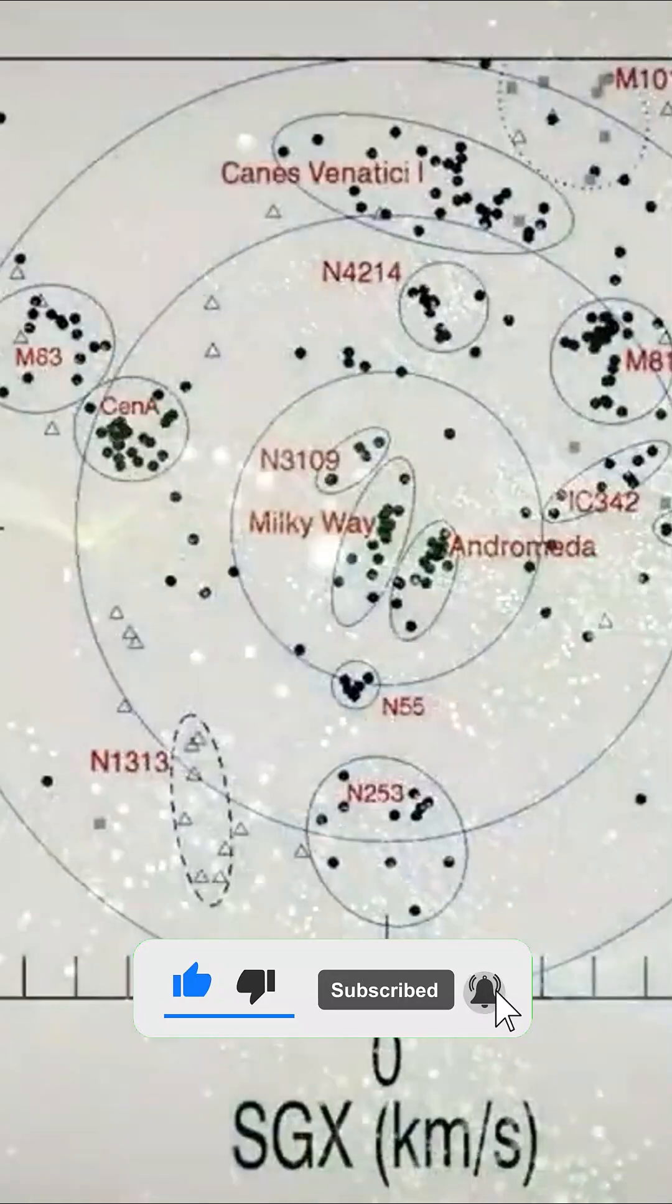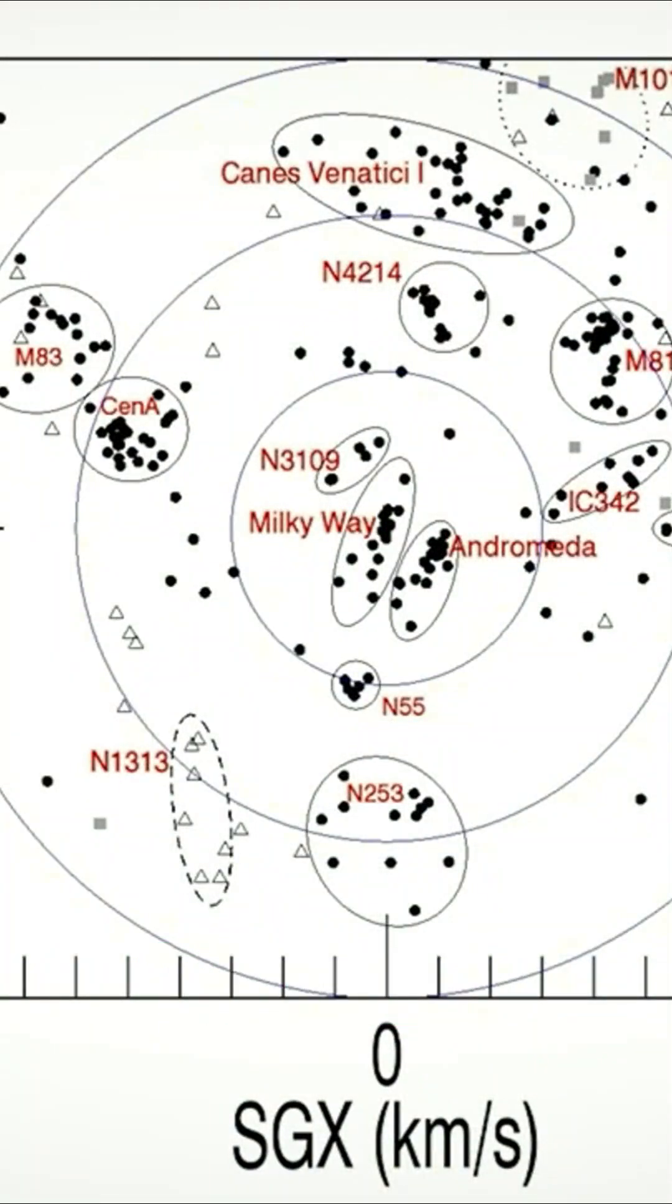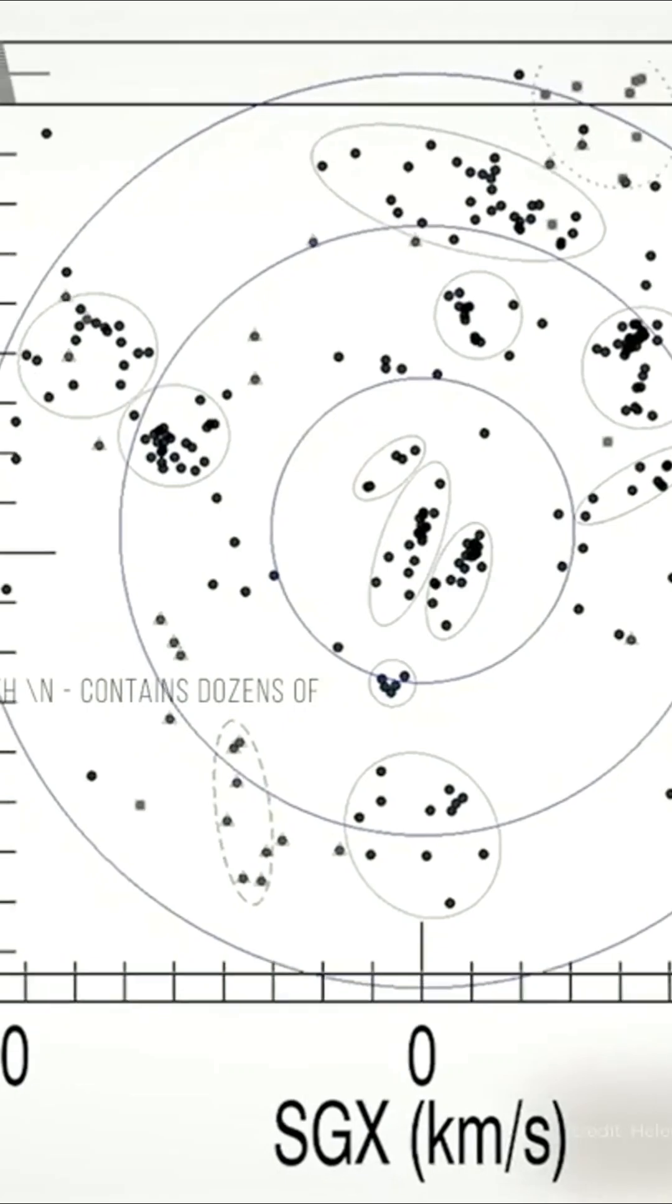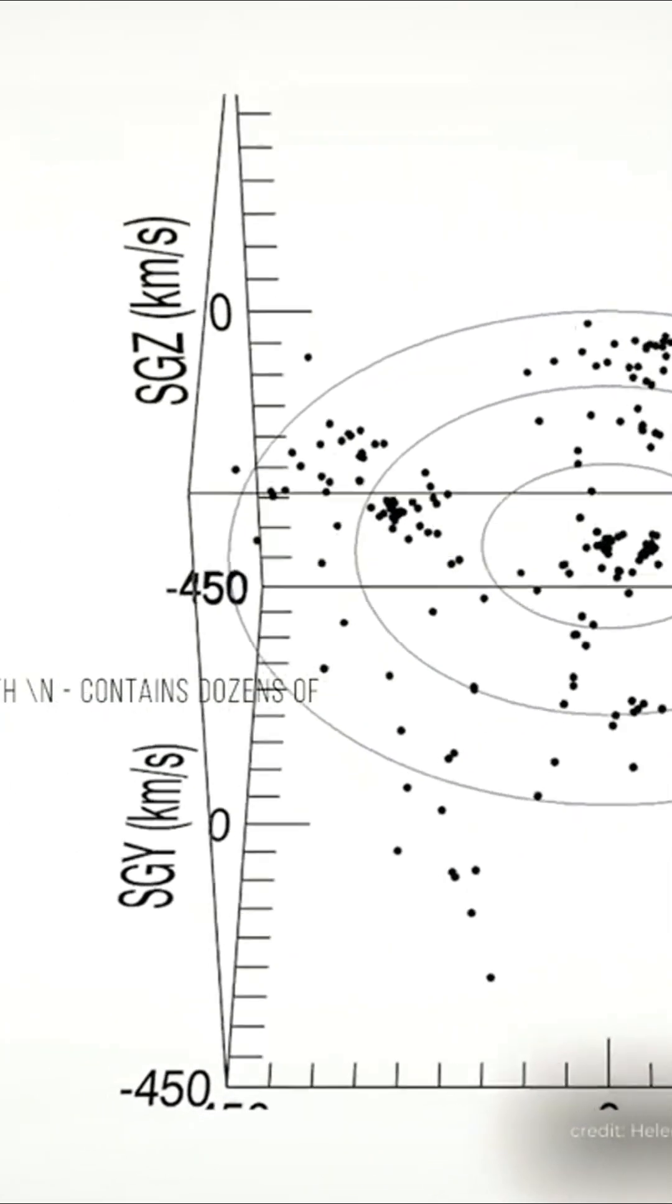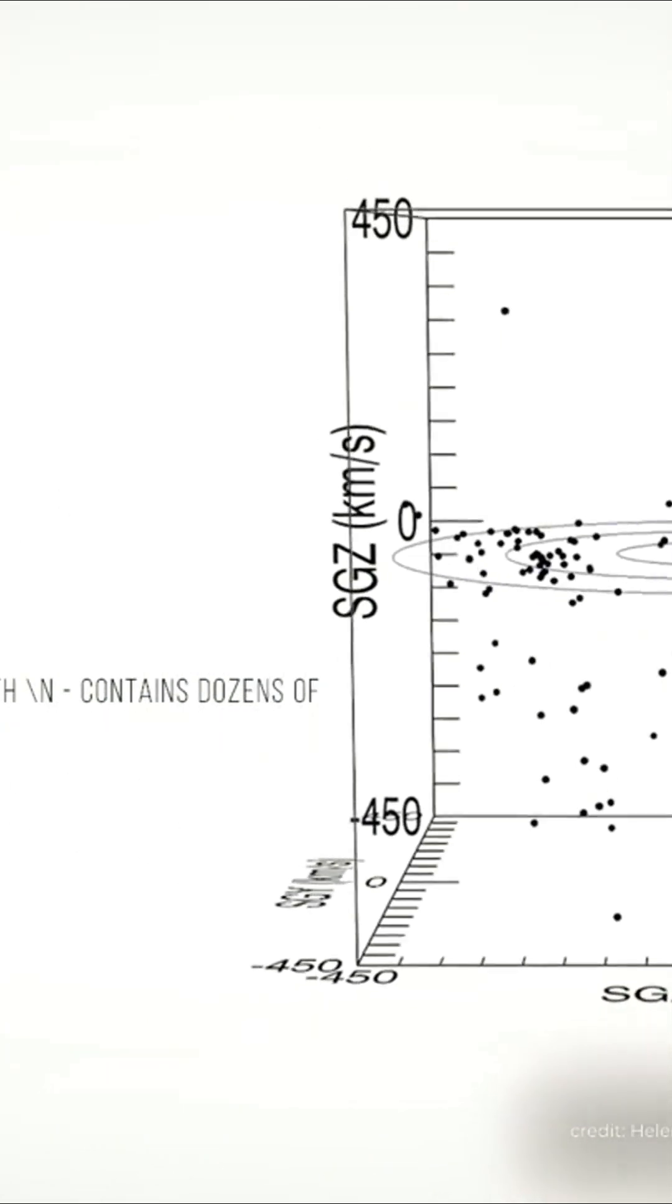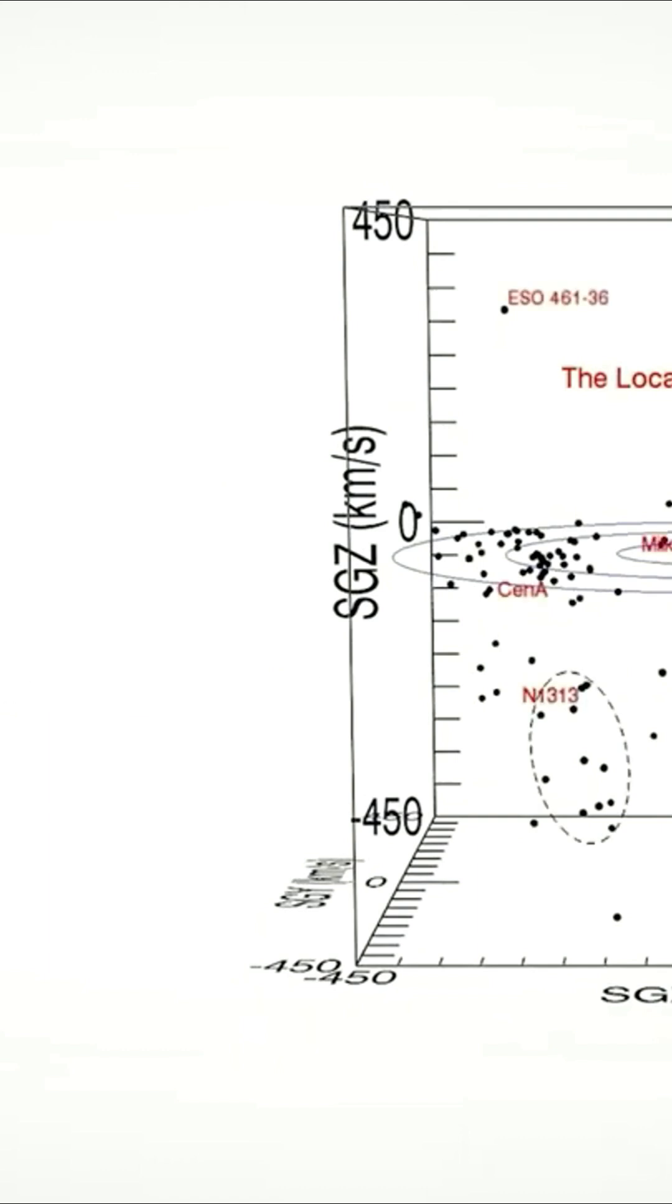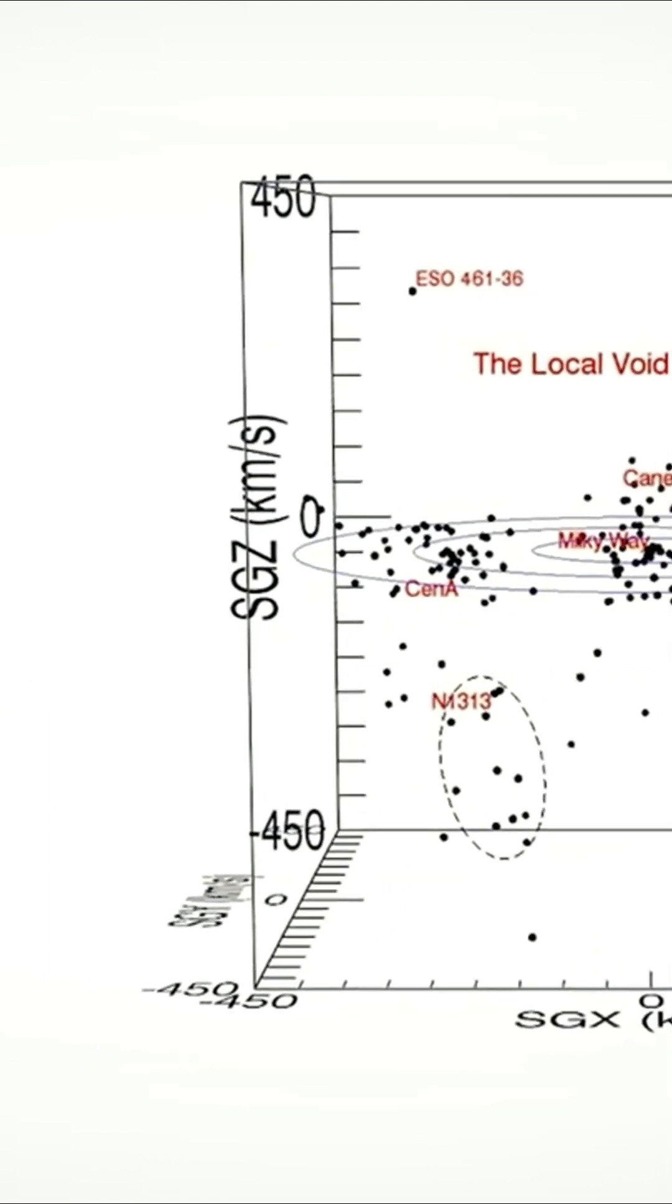The Local Void is so called because it lies right next to our local group, or at any rate, very close on the scale of the universe. It has been estimated that the Local Void lies 75 million light years from our planet.